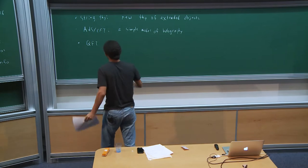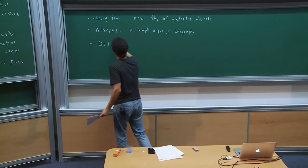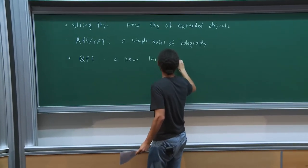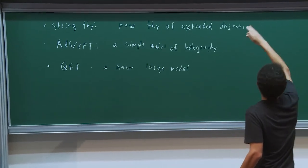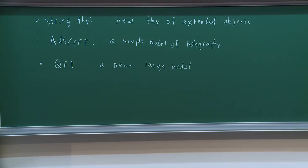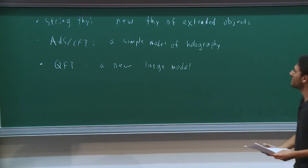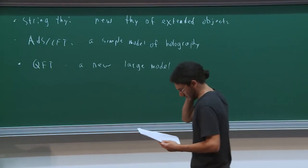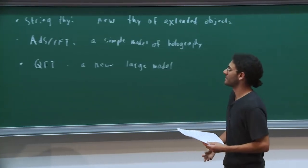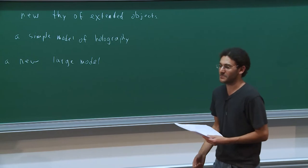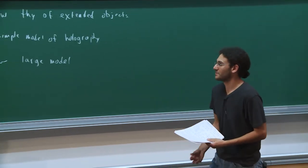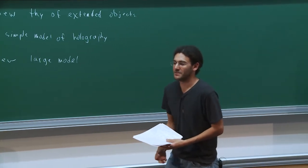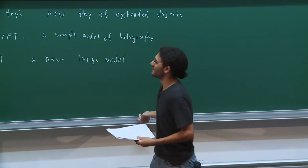From the QFT point of view, SYK is interesting because it's a new large-N model, more involved than the O(N) model. Summing melons is more difficult than summing bubbles — summing bubbles is almost trivial. It would be very nice if there was a higher-dimensional version that only summed melons, but there isn't really anything yet. It would also be nice if summing only melons in something like lambda phi⁴ theory corresponded to something physical, but as far as I know the answer is no.